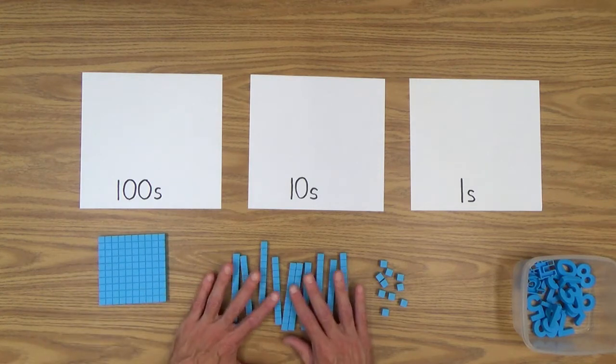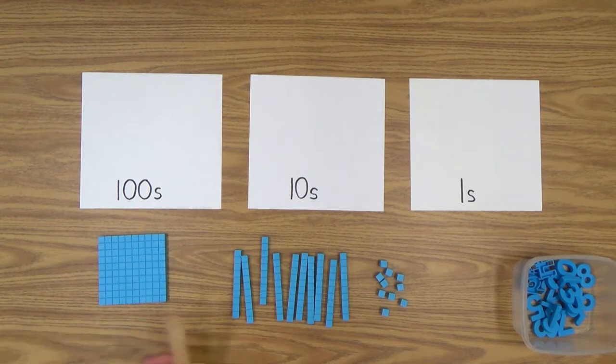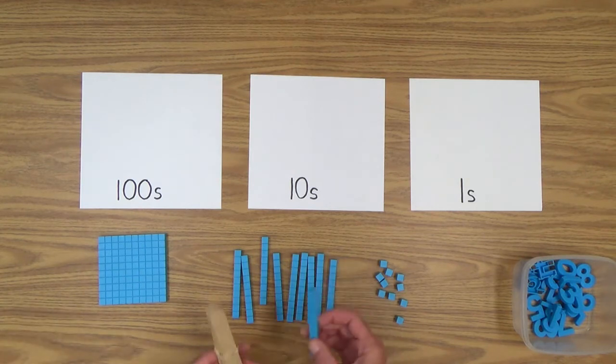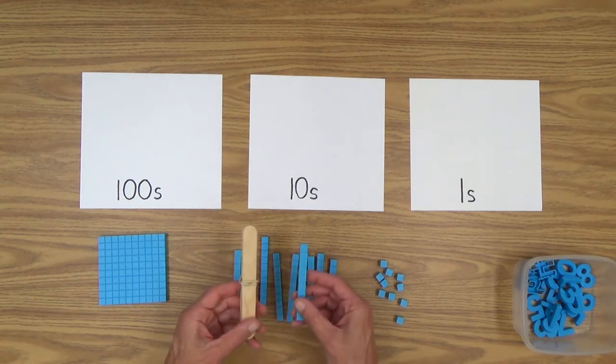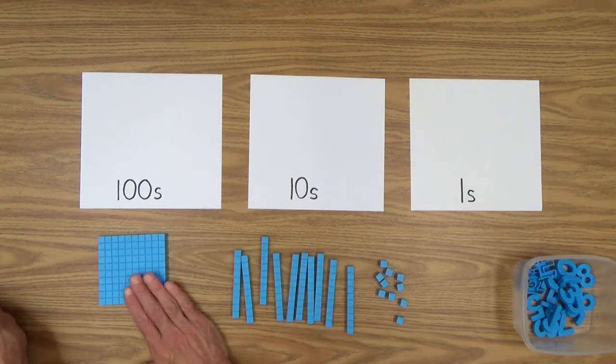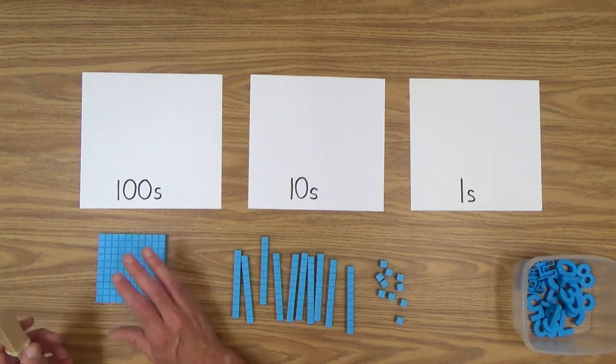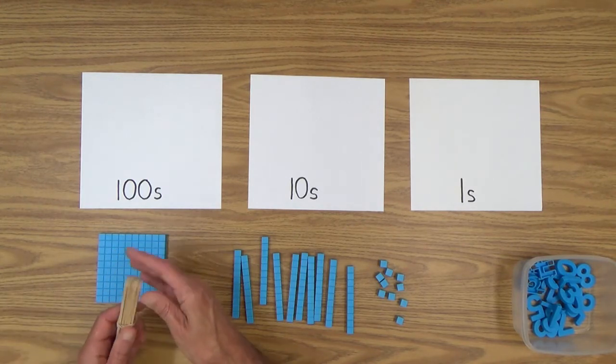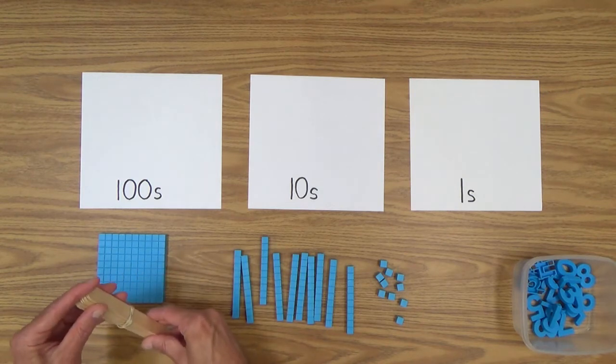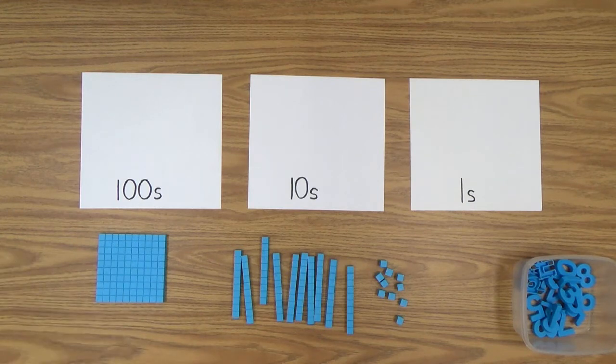And just to give you an idea how it relates to our craft sticks, of course, these are equivalent, one craft stick, one cube. These are equivalent, one rod and one bundle of craft sticks. And of course, I don't have these out, but this would be the equivalent of one bundle of, one giant bundle of these tens, smaller bundles of 10. In other words, a hundred, a bundle of a hundred craft sticks.